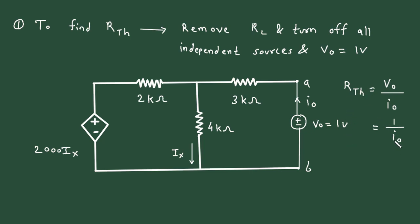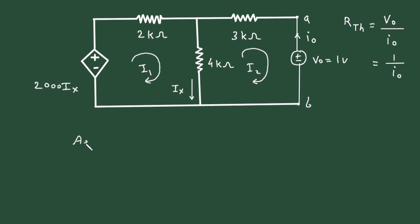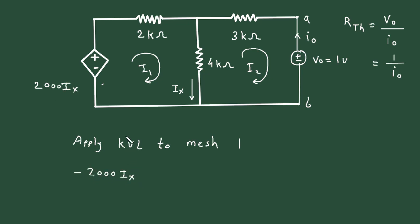Now to find the value of Rth, we need to find the value of Io. So we will find Io by using mesh analysis. Let's say this is mesh 1 with current I1 and this is mesh 2 with current I2. So first of all we will apply KVL, that is Kirchhoff's voltage law, to mesh number 1. Let's say we will start from this point, according to the direction of current I1.